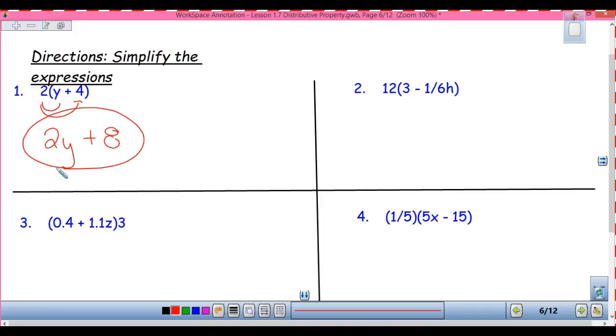All right, Evan, what am I multiplying first in number 2? 12 times 3. 12 times 3 gives us 36. Good. Now what am I multiplying? 12 times 1/6h. Good. You really know what a sixth of 12 is? Good. Okay? So we would have 12 over 1 times 1 over 6, right? Which gives us 12 over 6, which is 2. Good. So 2h is going to be our answer there.